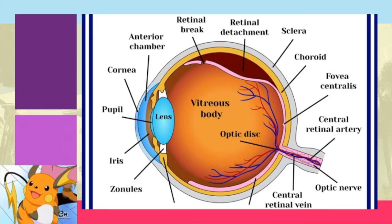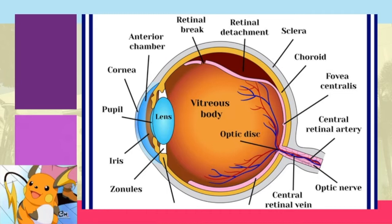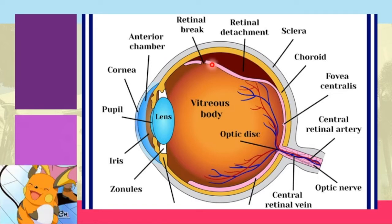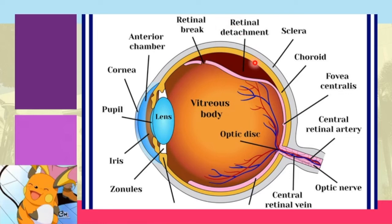The RPE is the retinal pigment epithelium, also referred to as your melanin epithelial pigment. Your sensory retina, shown here in pink, is where the rods and the cones are found. In retinal detachment, the sensory retina would pull away from the RPE, and fluid builds up between the two layers.